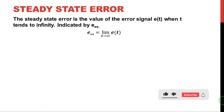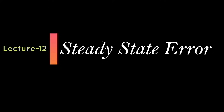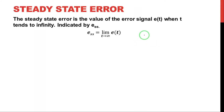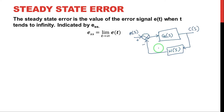Hi guys, in this lecture I am going to teach you the concept of the steady-state error. I will tell you the clear concept of steady-state error. This is the closed-loop block diagram with the forward gain G(s) and feedback gain H(s). So this is a simple closed-loop block diagram.